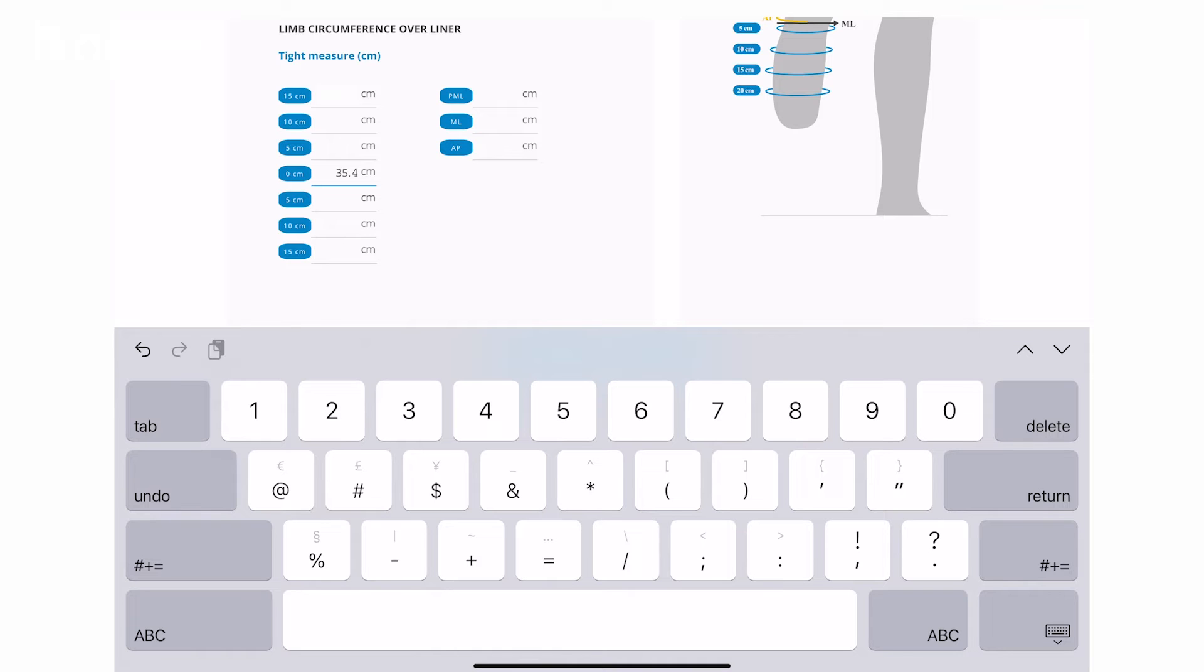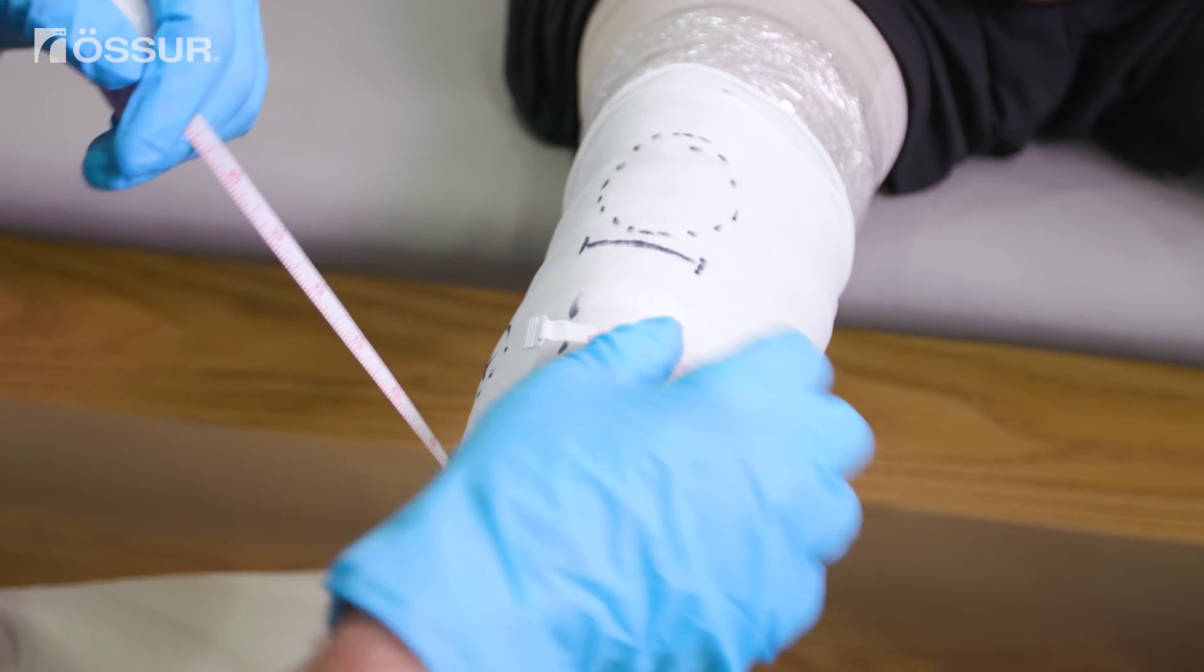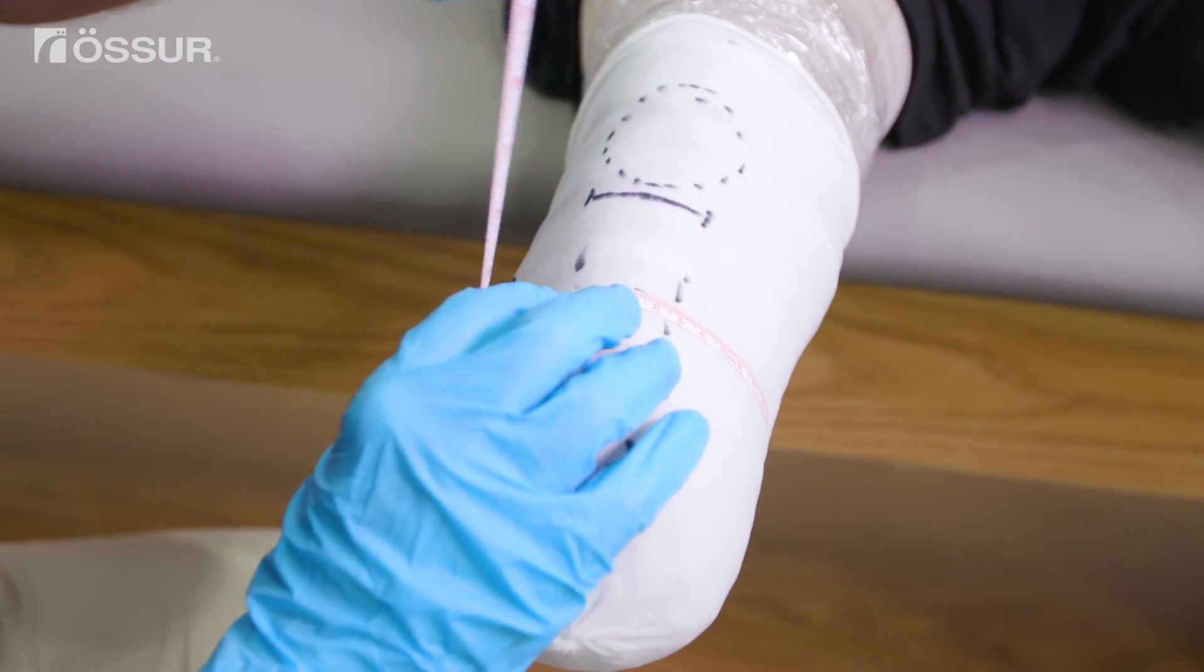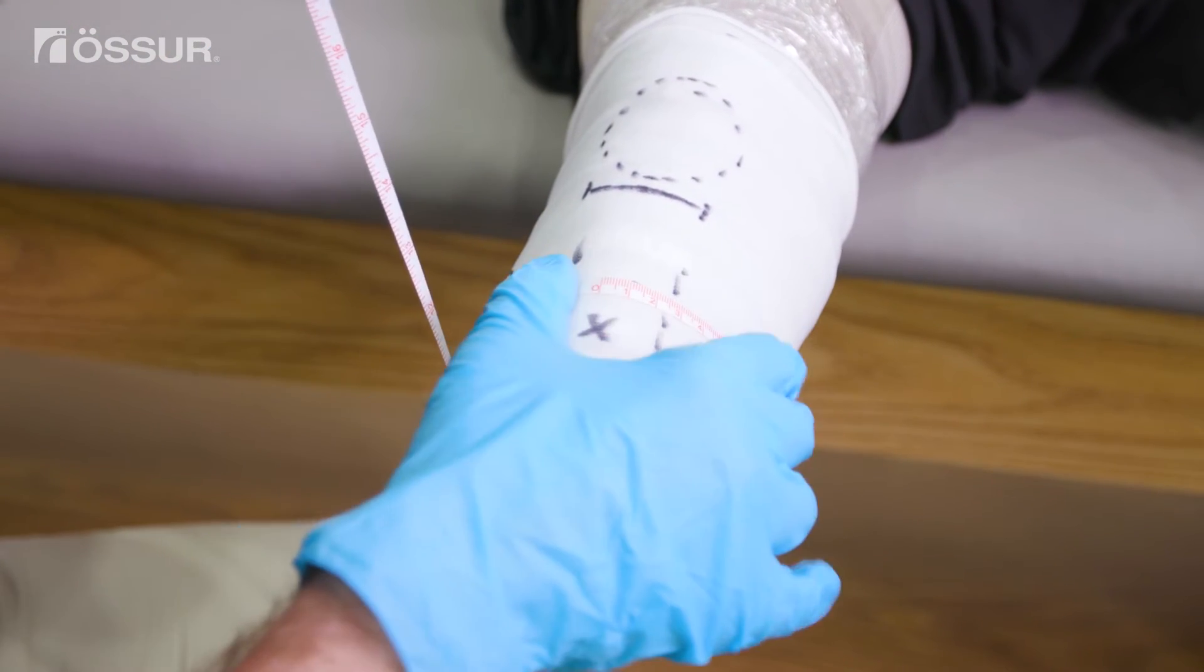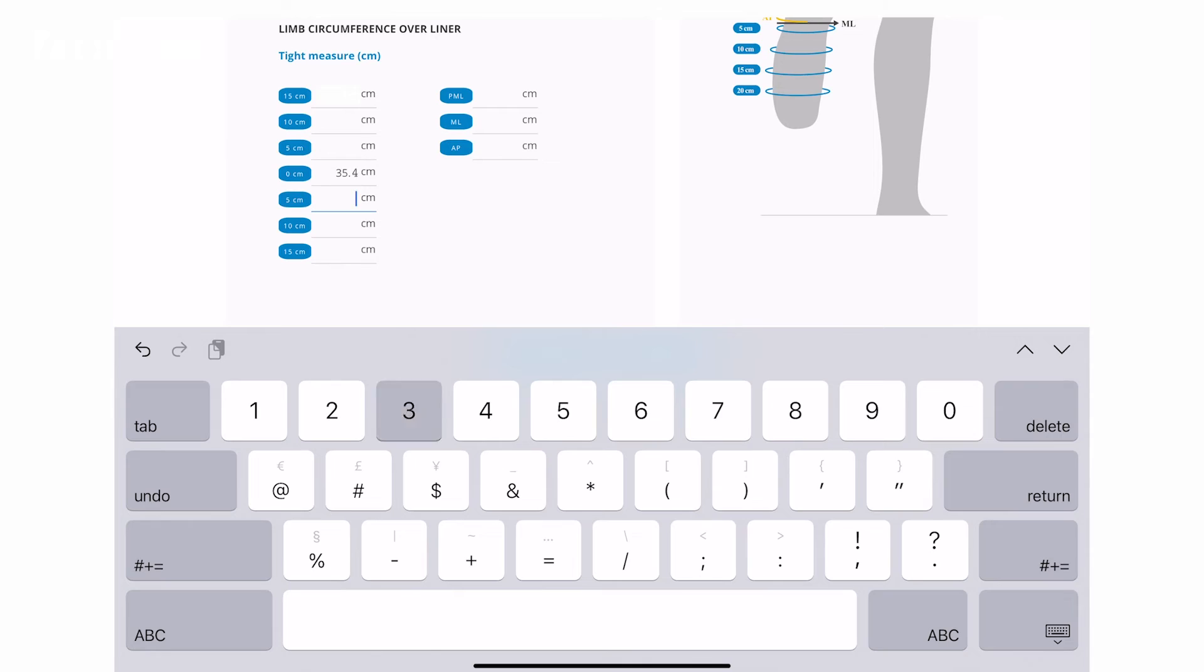Once entered, select the next field in the portal and measure the next marked location. Again, be consistent each time with how you measure the circumference. For this location, the circumference is 35 centimeters. Input that measurement into the portal.